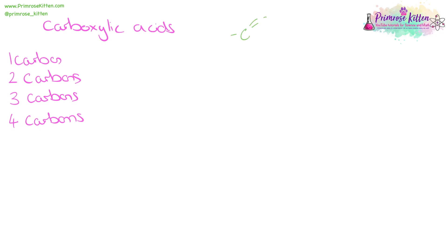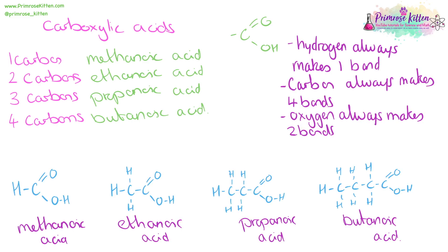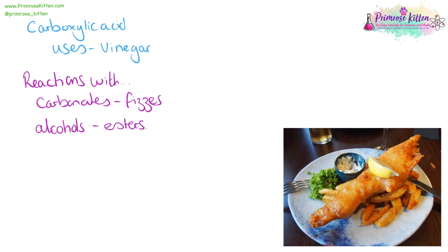Carboxylic acids have a COOH functional group. Something with one carbon is methanoic acid, two carbons is ethanoic acid, three carbons is propanoic acid. Methanoic acid has one carbon making four bonds, with a double-bonded oxygen and an OH group. Then ethanoic acid, propanoic acid, and butanoic acid — you need to be able to recognise and draw these. You use carboxylic acids much more than you realise, because ethanoic acid is vinegar. It is an acid, so if you react with any carbonate, you're going to get your standard acid-carbonate reaction and it's going to fizz.